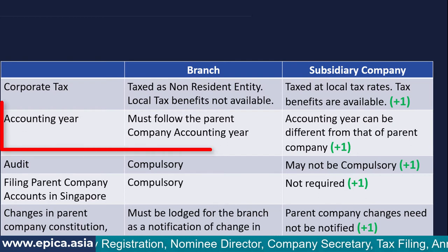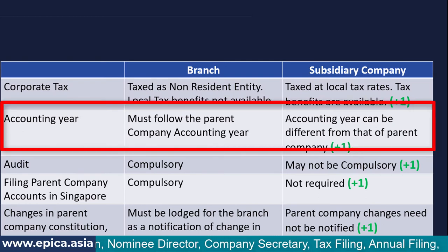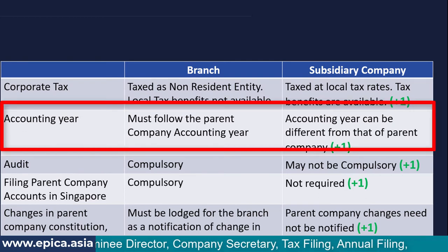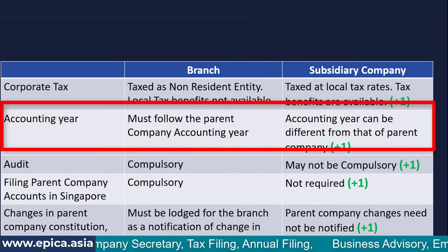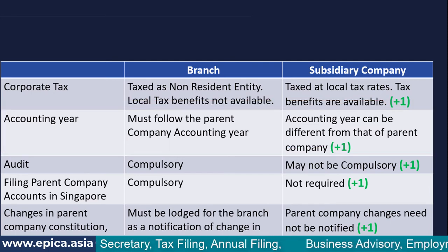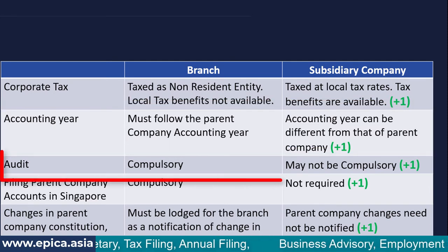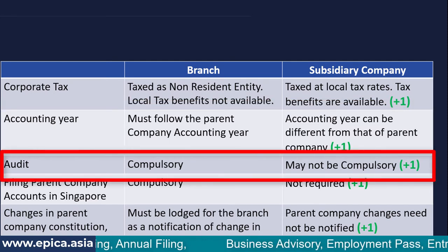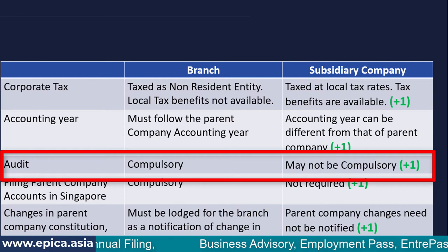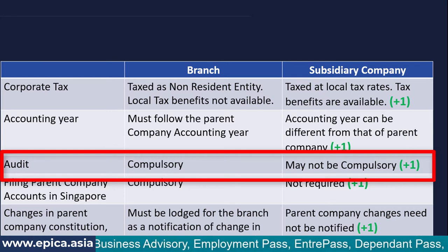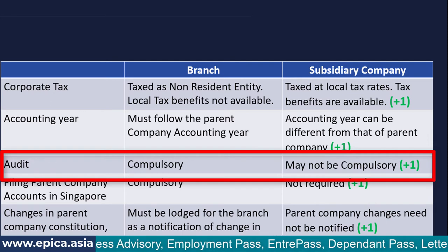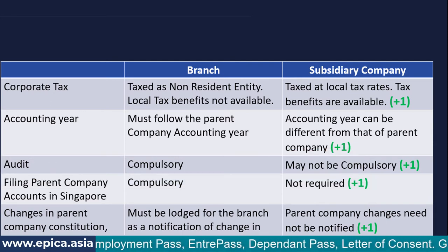A subsidiary company can follow its own accounting year, which can be different from that of the parent entity. Similarly, when it comes to audit, a subsidiary company's accounts may not be subject to audit depending upon the specific circumstances, whereas in the case of a branch, it is generally compulsory.